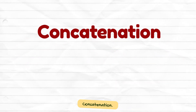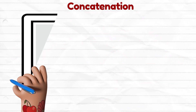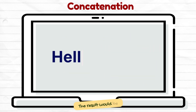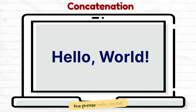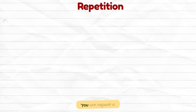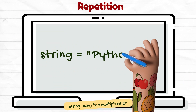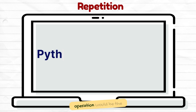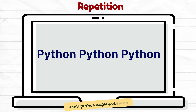Concatenation: strings can be combined using the addition operator. The result would be the phrase "hello world". Repetition: you can repeat a string using the multiplication operator. The outcome of this operation would be the word Python displayed three times.